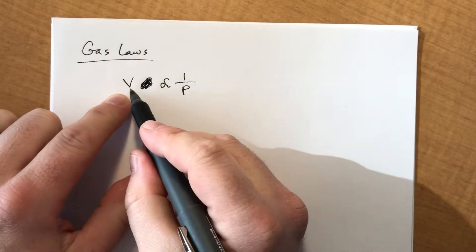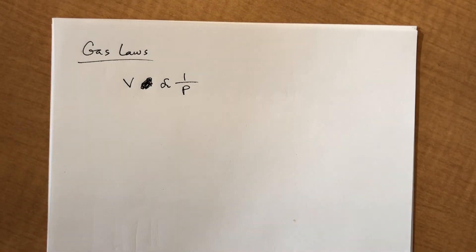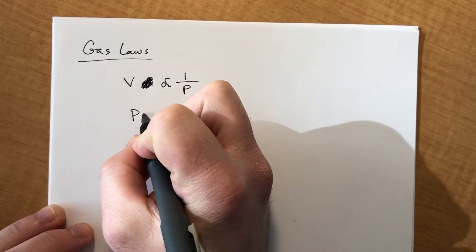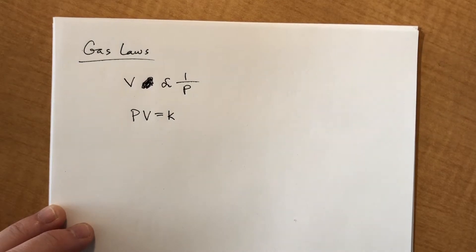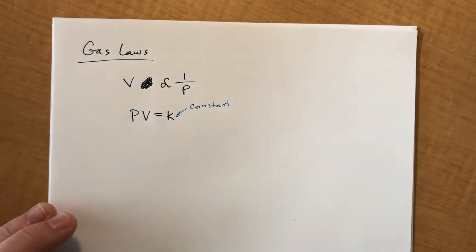So what this means is as volume goes up, pressure goes down. As pressure goes up, volume goes down. That doesn't help us a lot. We need to solve for specific numbers. It turns out that for any given situation if you multiply these together, it's going to equal some sort of constant.